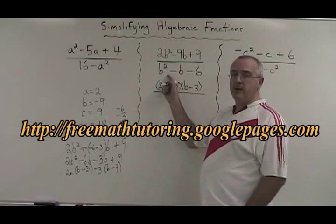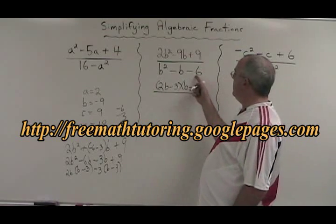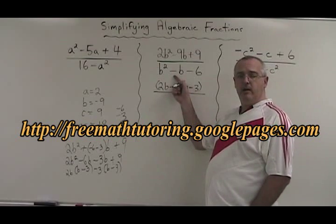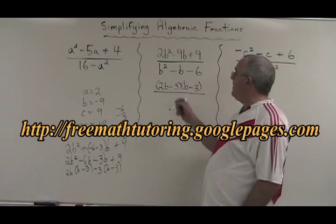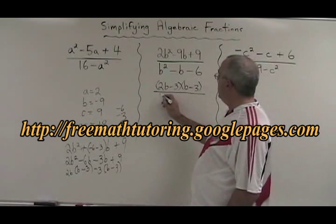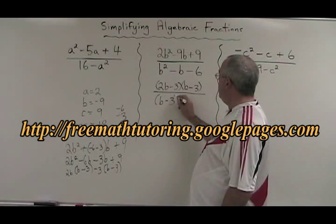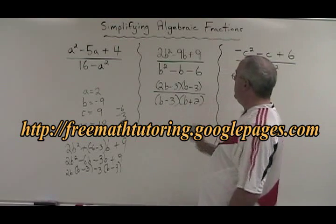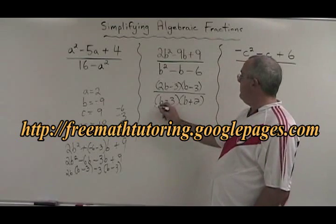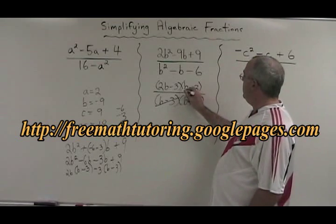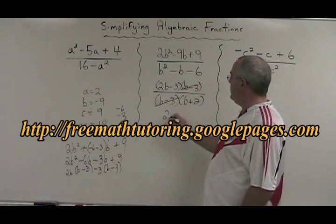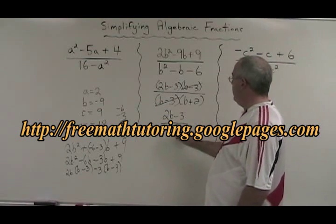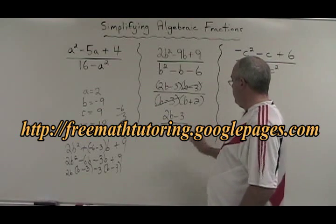Factoring the denominator: what two numbers multiply to give negative 6 and add to give negative 1? That would be negative 3 and 2, so we have B minus 3 times B plus 2. Cancelling, we have a B minus 3 on the bottom and on the top, so our final answer is 2B minus 3 over B plus 2.